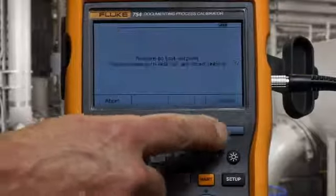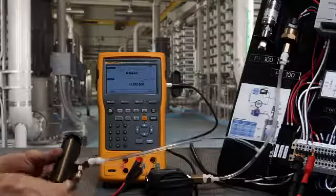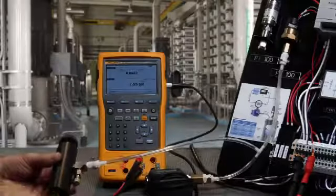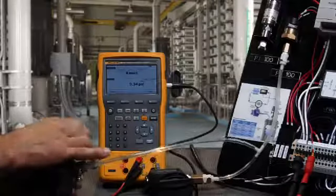Perform the test, select manual test, continue, close the vent on the pump, and pump the pressure up to the expected set point and look for the display to go from reset to set.